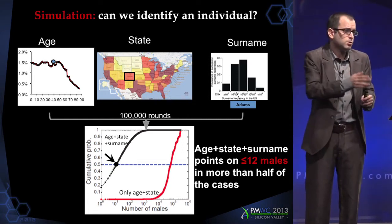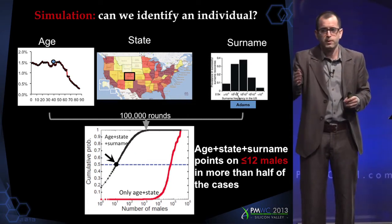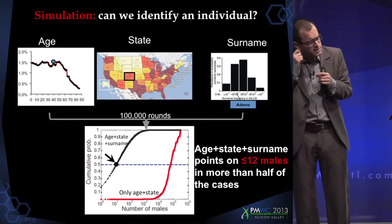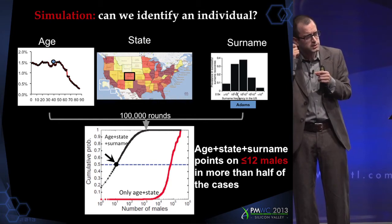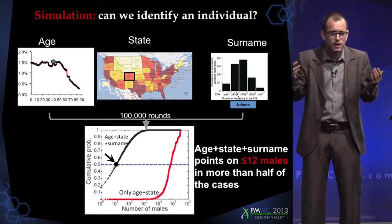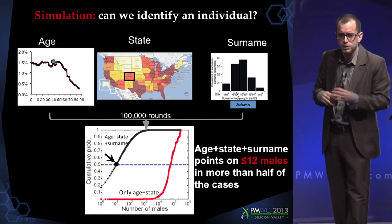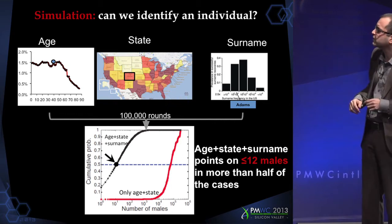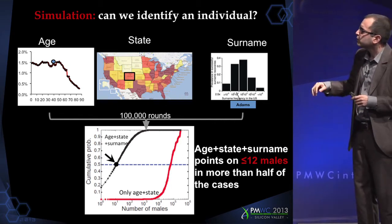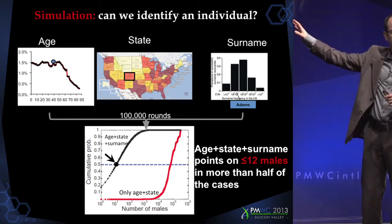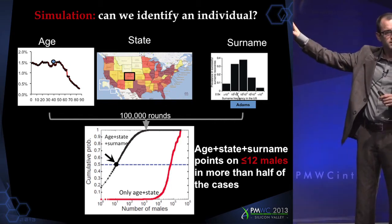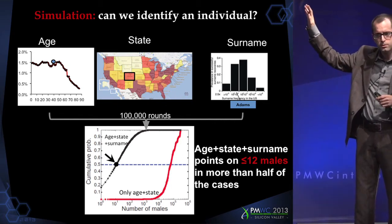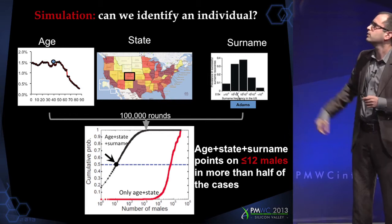When you have 12 males, every other piece of information will identify the person. You could just call all 12 people and ask if they participated in the genetic study. It's tractable at that scale. Of course, this is simulation — let me show you a real example.